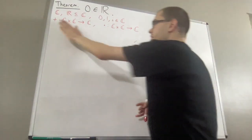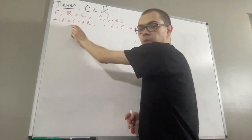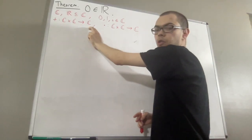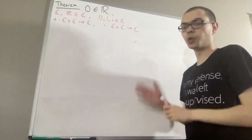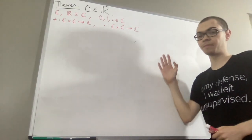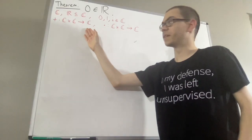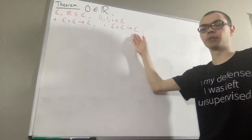Right, so these operations take any pair of complex numbers and map it to a complex number. So, given any two complex numbers, A and B, A plus B is a complex number, and A times B is a complex number.